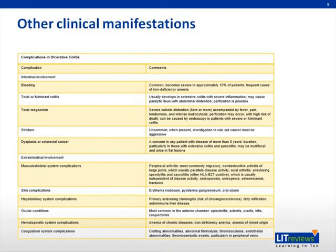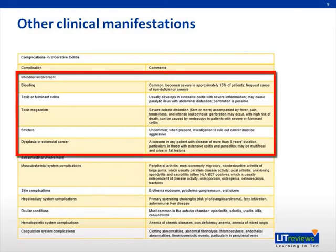Let's review the clinical manifestations of ulcerative colitis in greater detail. In terms of intestinal involvement, ulcerative colitis frequently causes bleeding from inflamed mucosa leading to iron deficiency anemia. In some cases, it can progress to fulminant colitis or even toxic megacolon, a very serious condition with high risk of mortality. Emergency surgery is commonly required for management of these extreme manifestations. Additionally, the presence of ulcerative colitis increases a person's risk of developing colorectal cancer, and frequent surveillance with colonoscopy is advised.